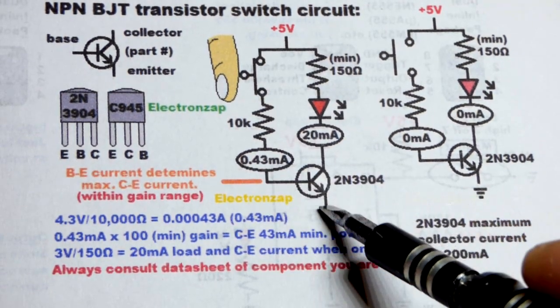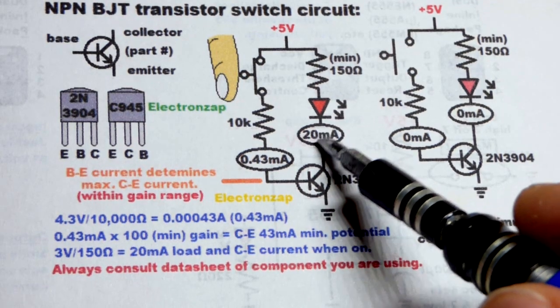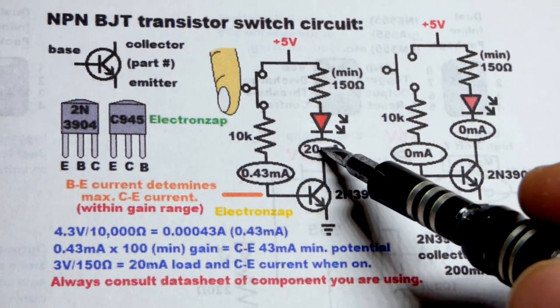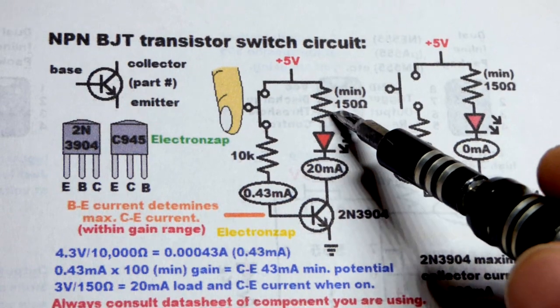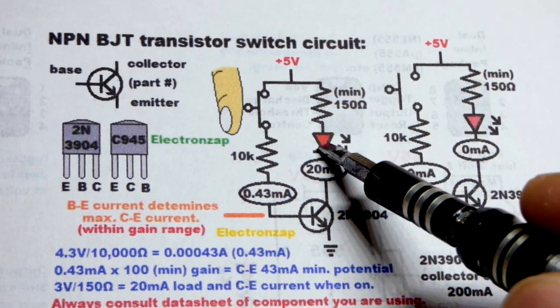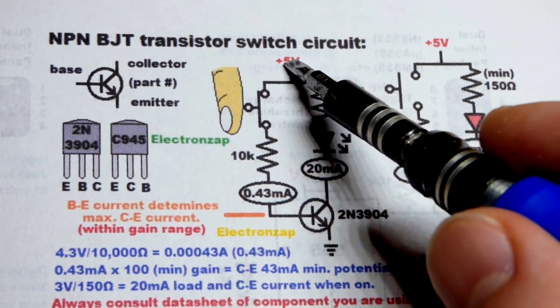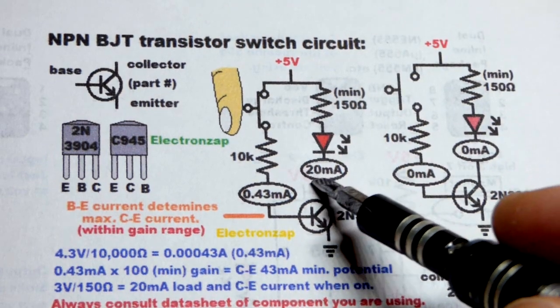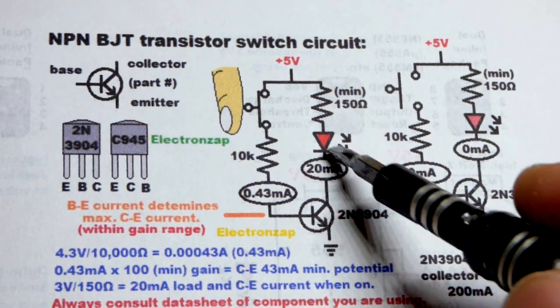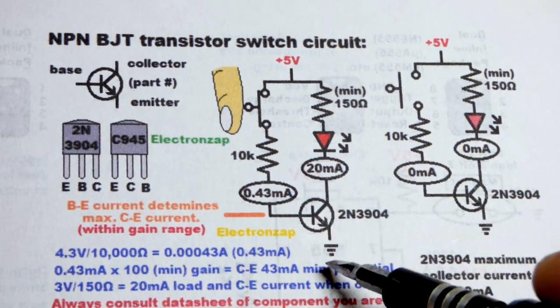But in any case, all we need is at least 20 milliamps or more that we let through collector to emitter. And so a little less than half of a milliamp from base to emitter will definitely give more than that. We'll do the math coming up. But that small amount of current lets many multiples. In this case, it'll let over 20 milliamps of current with a 150 ohm resistor, protecting a red LED, and 5 volts across it. We should get about 20 milliamps right there, the maximum current you want to put through an LED.